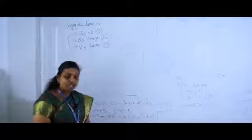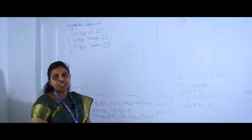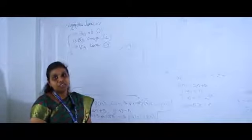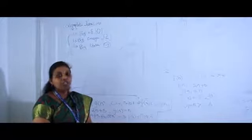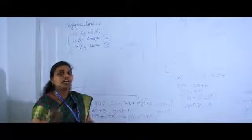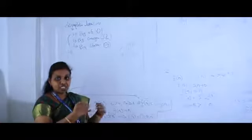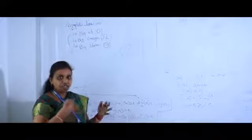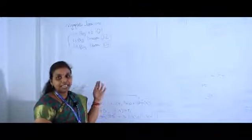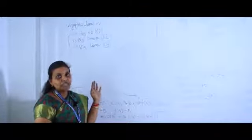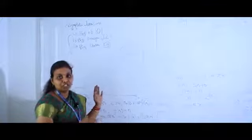For any algorithm you take, you will calculate the function f(n) based on the input size. Once you have identified that function, consider another function g(n) that bounds f(n) in its upper limit — then we call f(n) as Big O of g(n). If g(n) bounds f(n) in its lower limit, we call it Big Omega of g(n).